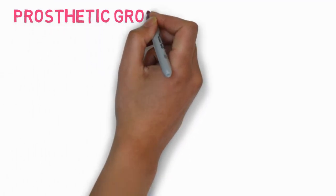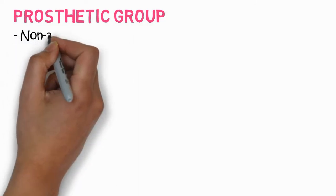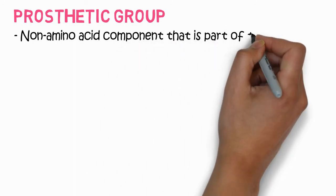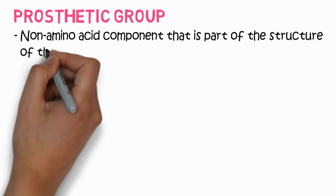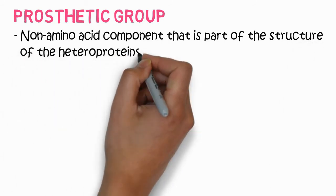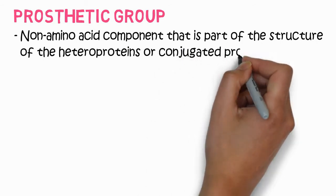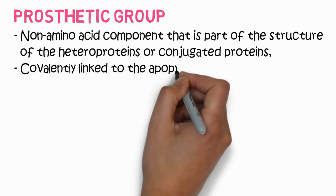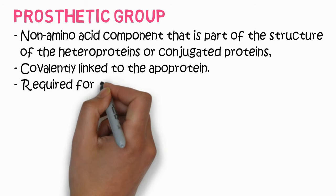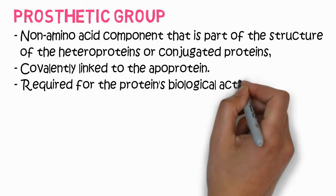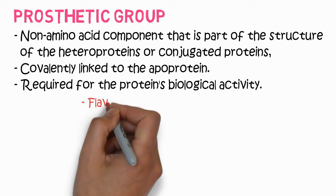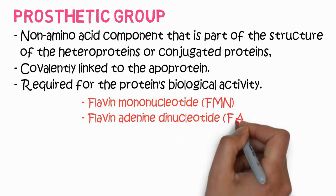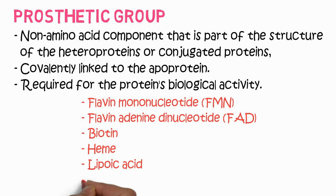Next important part is prosthetic group. Prosthetic group is a non-amino acid component. It is a part of the structure of the heteroprotein or conjugated protein. It is covalently linked to the apoprotein. It is required for the protein biological activity. Remember, it should not be confused with the cofactor. Examples of the prosthetic group are flavin mononucleotide (FMN), flavin adenine dinucleotide (FAD), biotin, and so on.